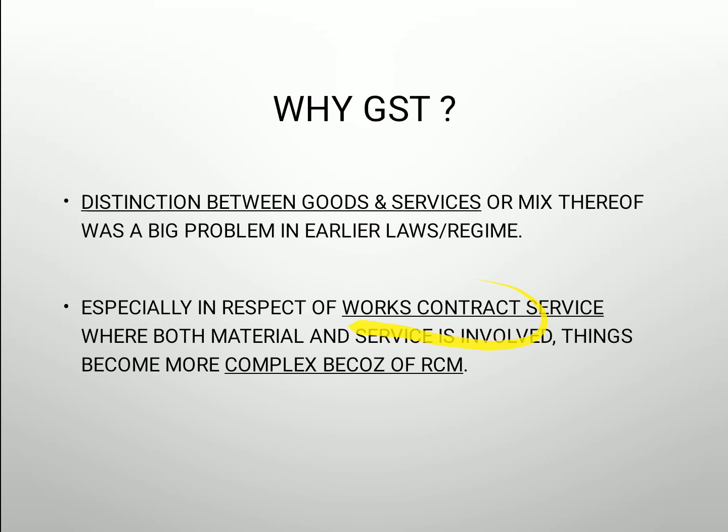The best example is a work contract — take jewelry for instance. Suppose I bring gold and get jewelry made from it. The making charges are essentially a service charge. So earlier, VAT was applicable on the gold, and service tax was also applicable on the making charges. So two separate taxes on one transaction.